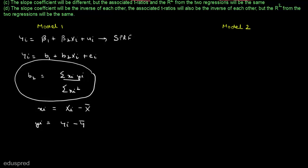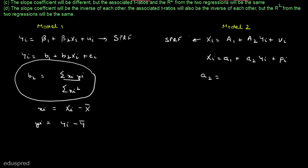Now let's switch to model two and find its slope coefficient. In model two we are running the regression of x on y. The stochastic population regression function is: Xi = A₁ + A₂Yi + vi. The sample counterpart is: xi = a1 + a2·yi + pi, where pi is the error term and a1, a2 are estimators of A₁ and A₂. Using OLS, the slope coefficient a2 equals summation(yi·xi) divided by summation(yi²).